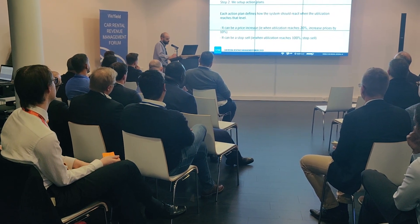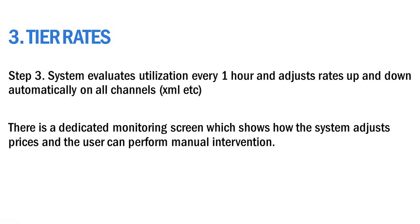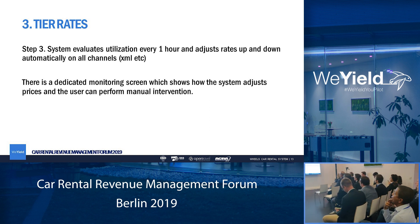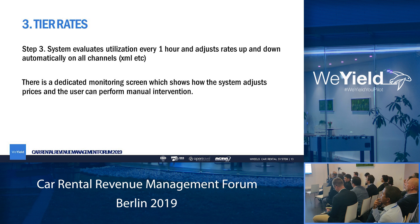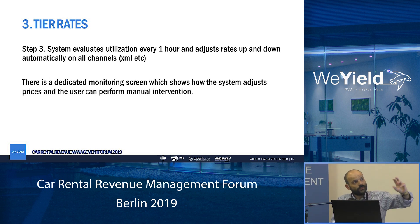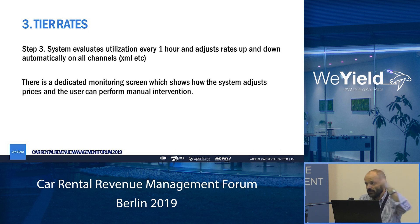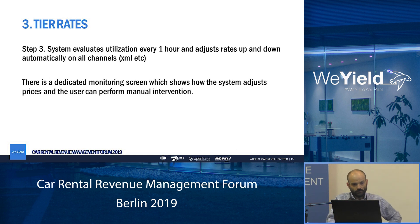By default the system operates every one hour and recalculates your availability 52 weeks ahead — for every car group and every location. For smaller locations you can run it every 10 minutes. On one system we measured that runs 35,000 cars, it took 50 minutes to rebuild a full year ahead covering every day, every car group, and every location combination — which involves millions of processing operations.